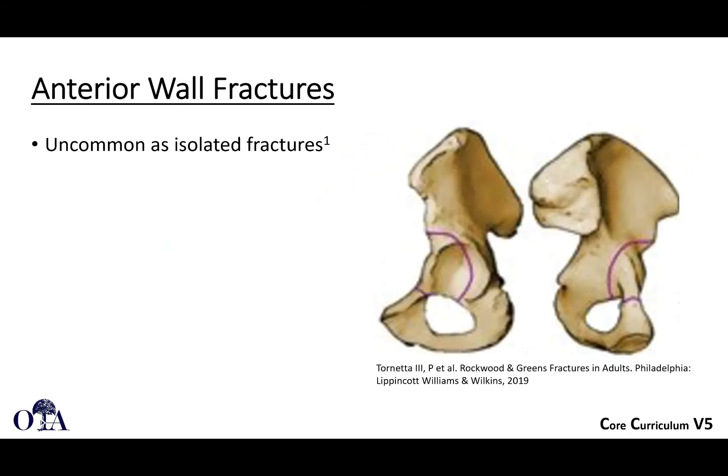The first elementary pattern is the anterior wall fracture, which is somewhat uncommon as an isolated fracture. Here we're showing views of the outer table and views on the inner table side. We'll go through these with each of the fracture patterns so you're oriented. The anterior wall fracture will often look something like this.